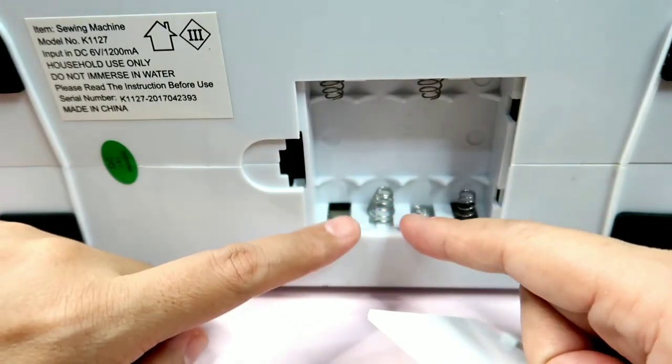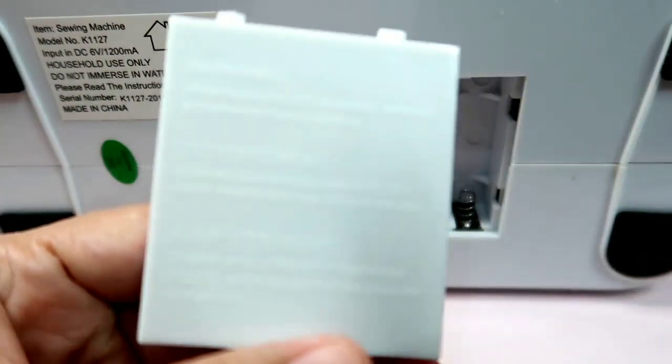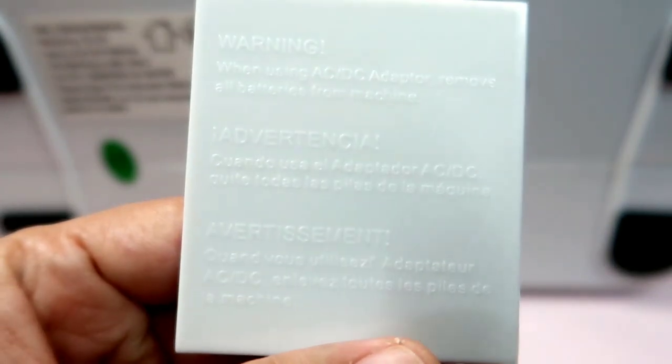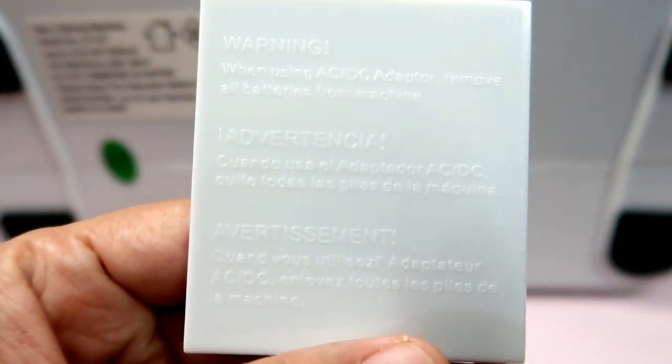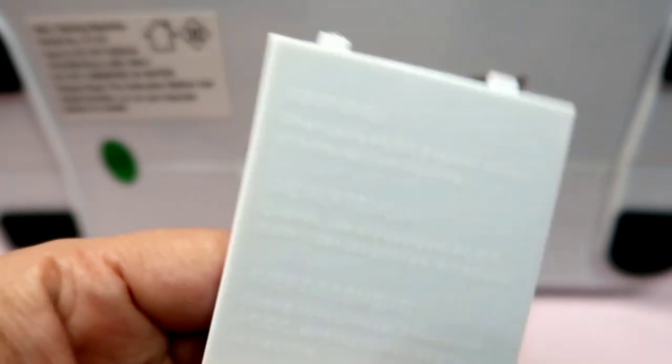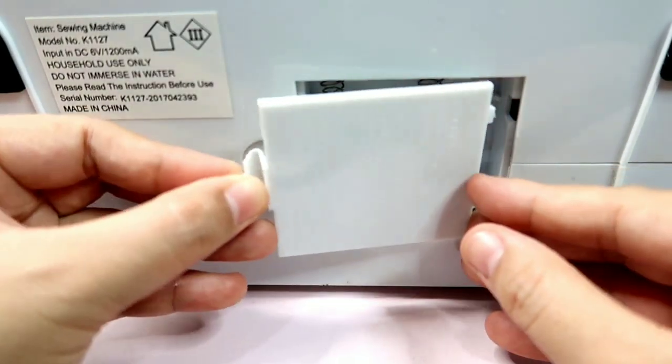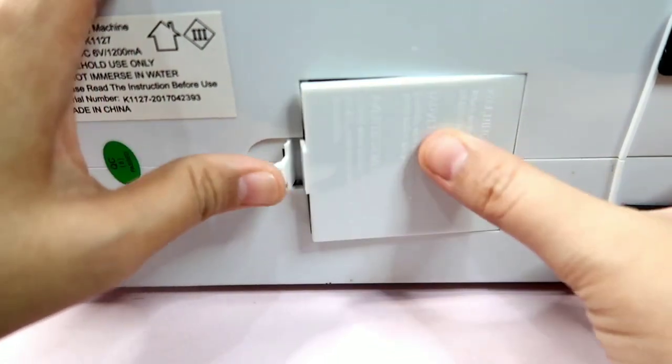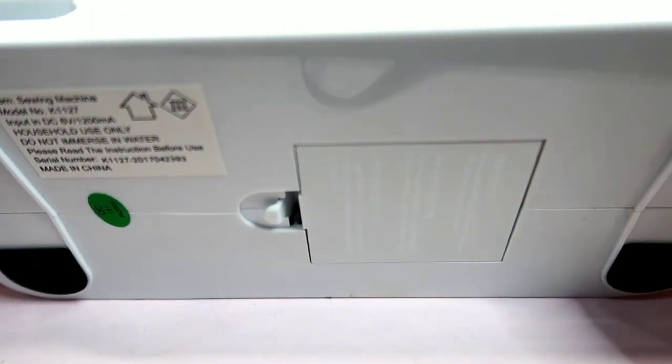This is the bottom part. The machine model number, input voltage, household use only, do not immerse in water. Make sure to keep the instructions for future reference. This is the battery part. I don't use it because there's power. It requires 4 AA batteries.